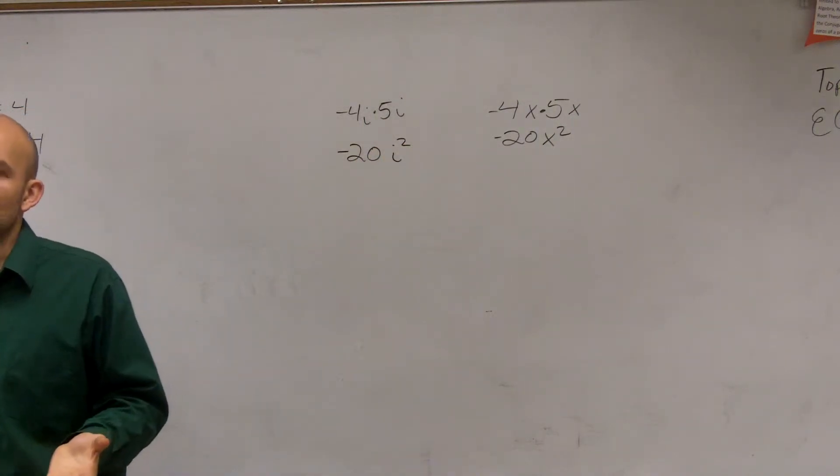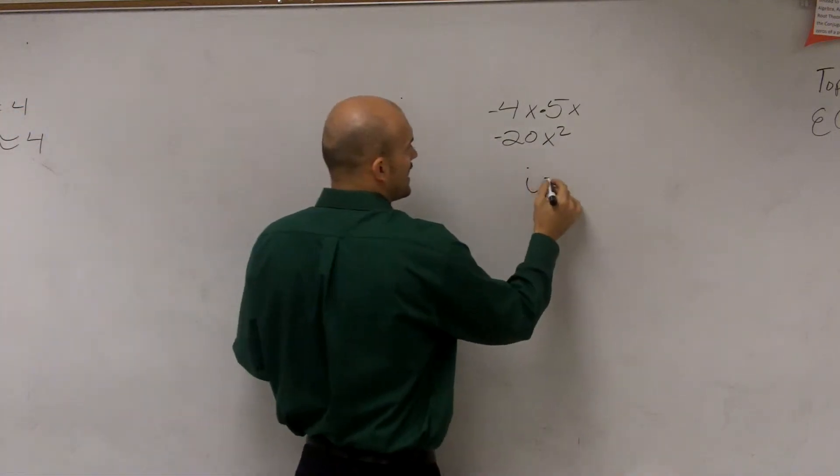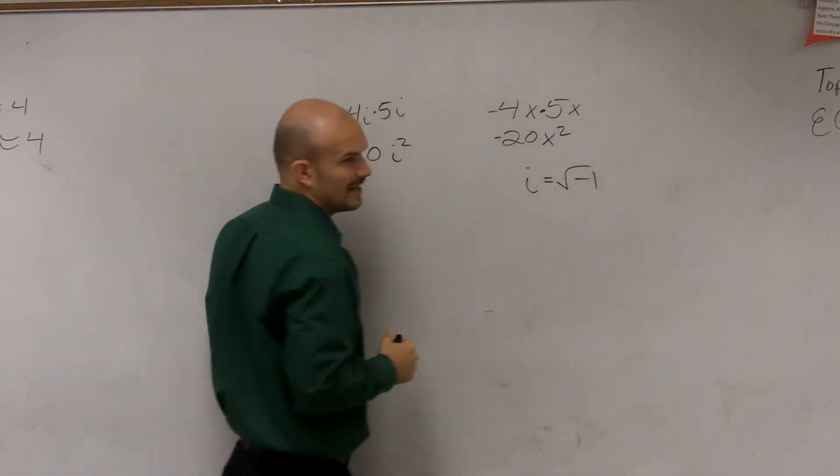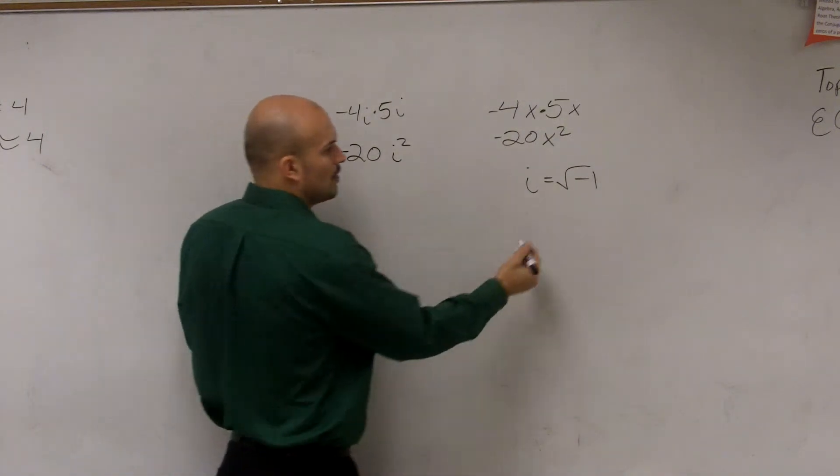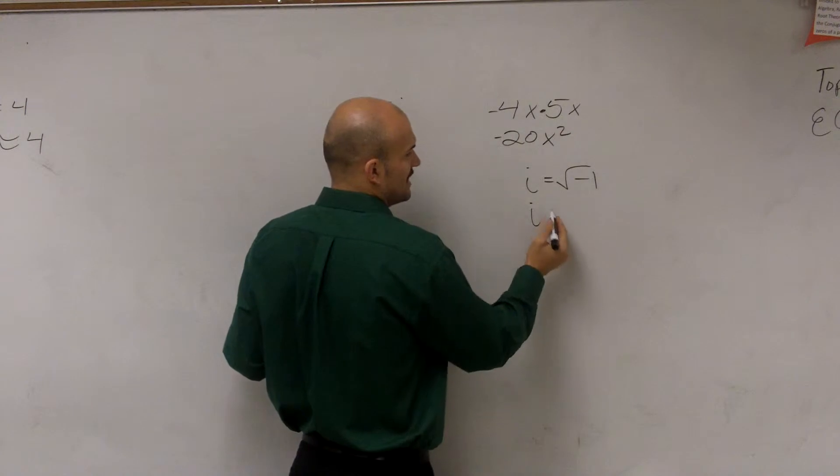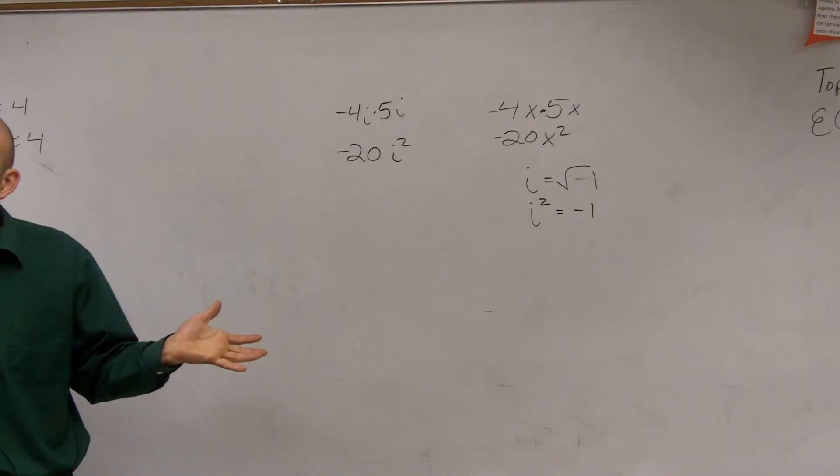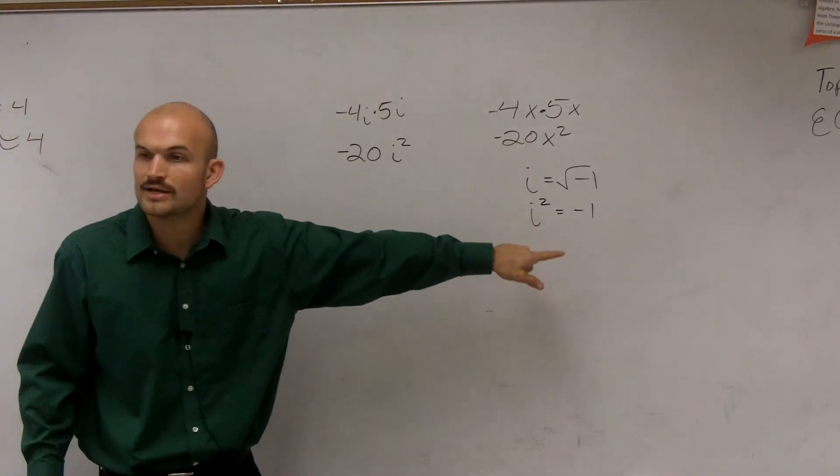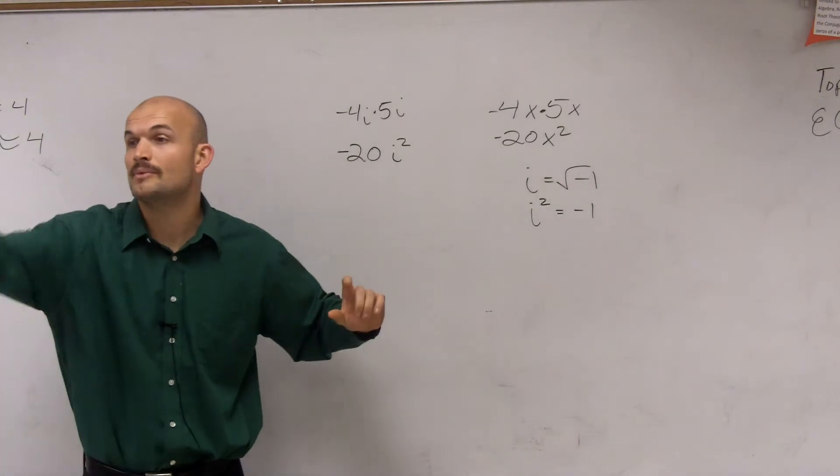But remember, if you remember last class period, we talked about the definition of i. And remember, we said that i represented the square root of negative 1. So if i represents the square root of negative 1, what that means is i squared equals negative 1. Because if you were to square both sides, you get i squared equals negative 1. So that definition is going to be very important for you guys to remember.